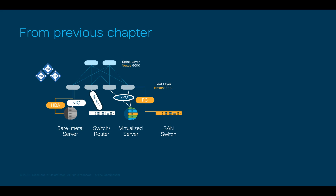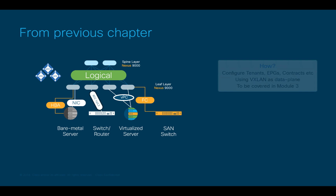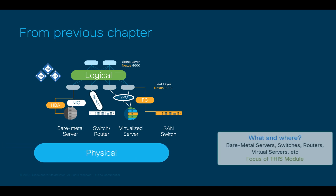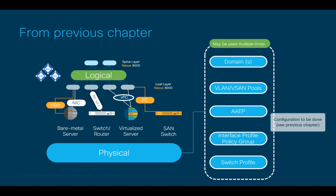In the previous chapter, we learned that in ACI we need to configure two types of networks. We use Logical Networks to define how we want to communicate different endpoints using VXLAN across the fabric, and Physical Networks to define what we want to connect on any given leaf port. We also learned that first we need to configure the Physical Network by asking ourselves a set of simple questions that will allow us to connect pretty much anything to ACI. If you need to review those questions, please take a look at the previous chapter, since we will be using them extensively.